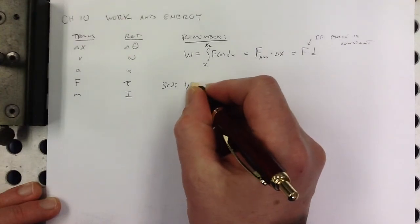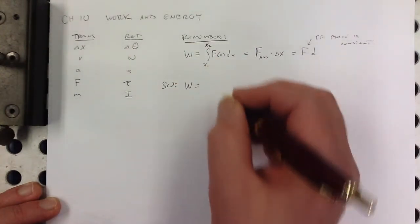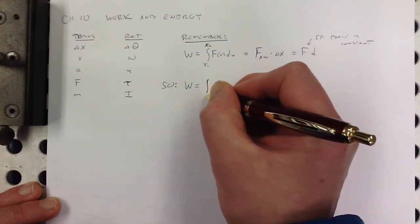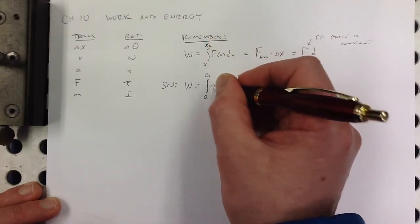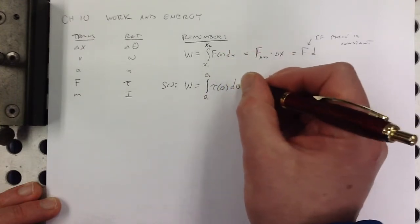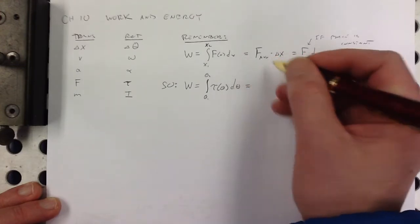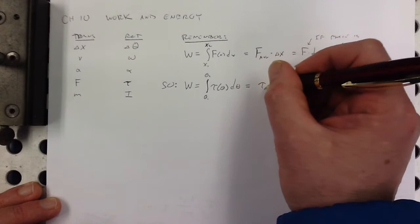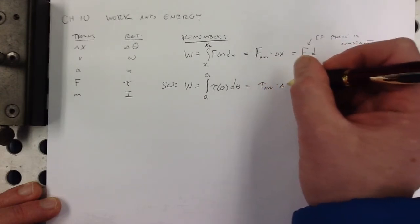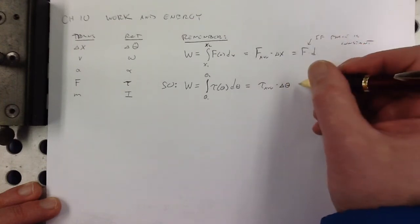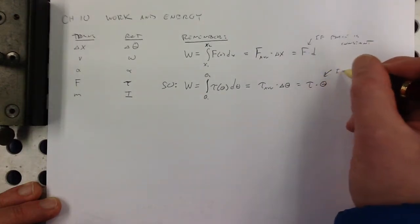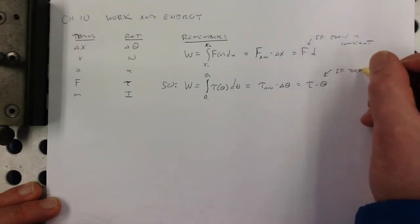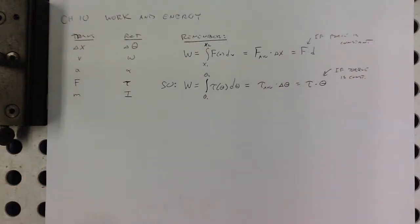Work is still work, it's just the rotational version, still measured in joules. If we're in a rotational context, then work is equal to, instead of x1 to x2, we have theta1 to theta2 of torque, instead of force, as a function of theta, instead of x, which would be d theta. If we want to talk about average or constant, then we have the average torque times that angular displacement, which is just equal to torque times that angle if the torque is constant. Everything works just like we would like it to.